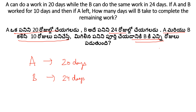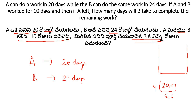First, find the total work using LCM of 20 and 24, which equals 120. So total work is 120 units.